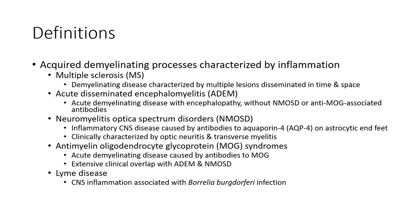Definition: acquired demyelinating processes characterized by inflammation. Multiple sclerosis (MS) is a demyelinating disease characterized by multiple regions disseminated in space. Acute disseminated encephalomyelitis (ADEM) is an acute demyelinating disease with encephalopathy. Also included is NMOSD and anti-MOG associated antibodies.